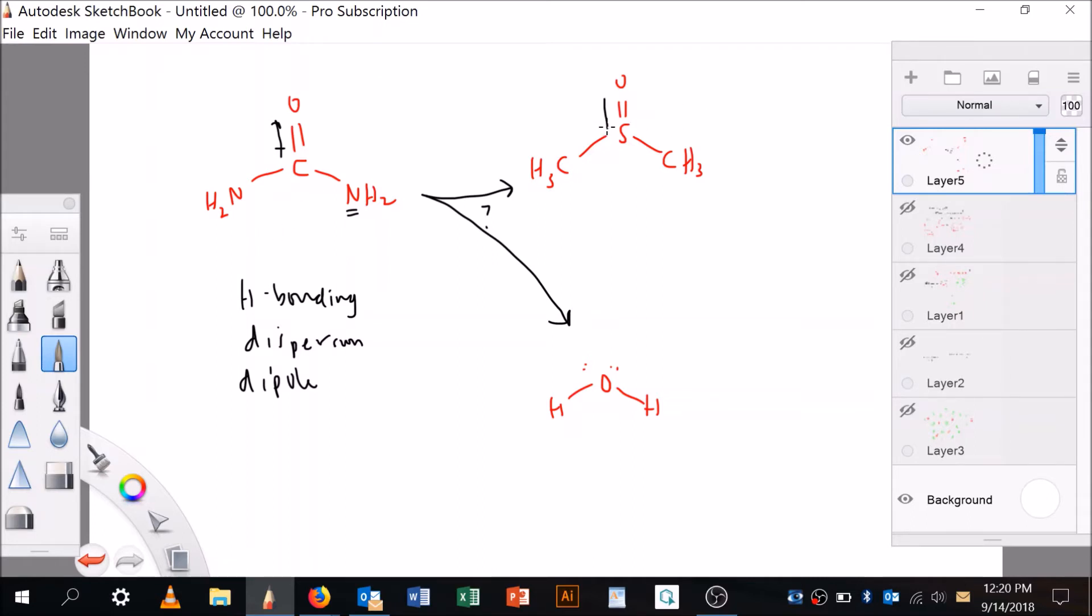Okay, so first of all, I see a hydrogen that's bonded to an electronegative element, so hydrogen bonding is a possibility. Dispersion is always a possibility. And I also see a polar bond, so dipole-dipole interactions are a possibility. Okay, those are the intermolecular forces that urea experiences.